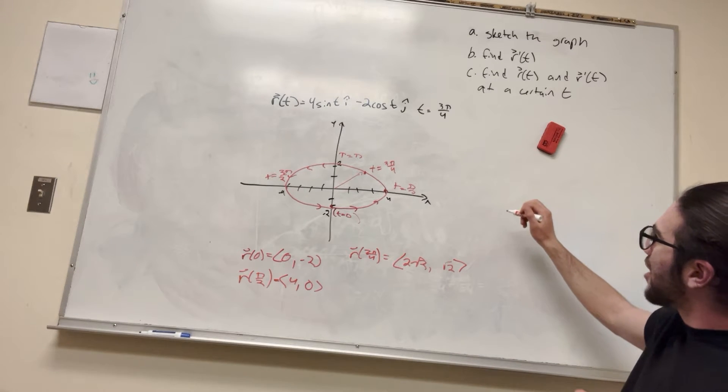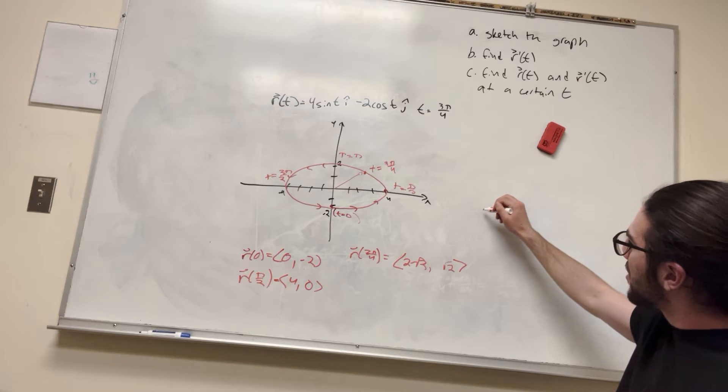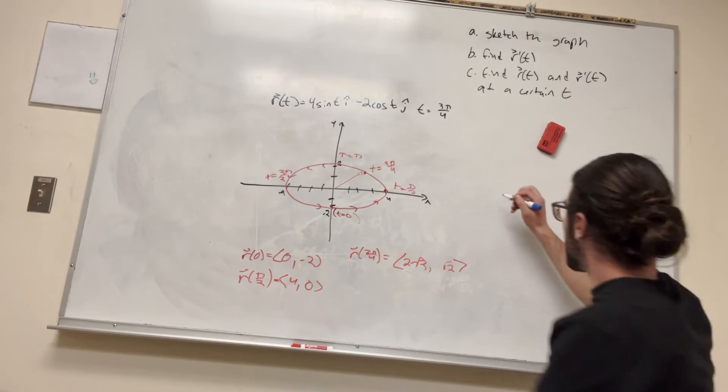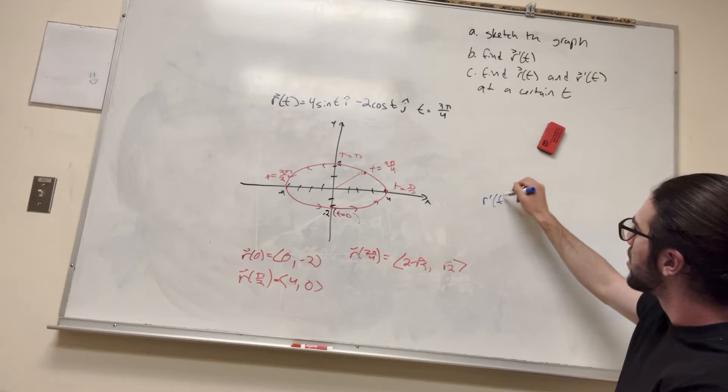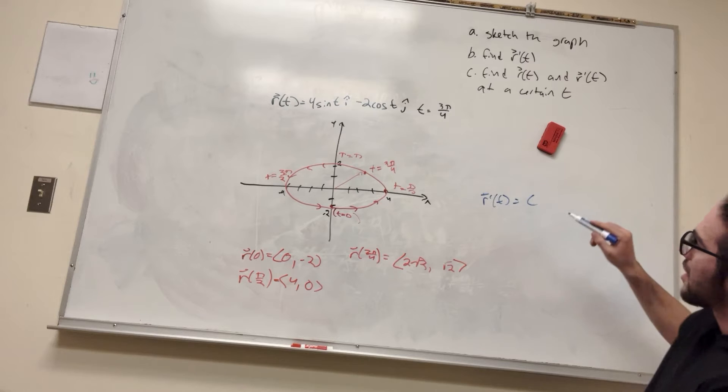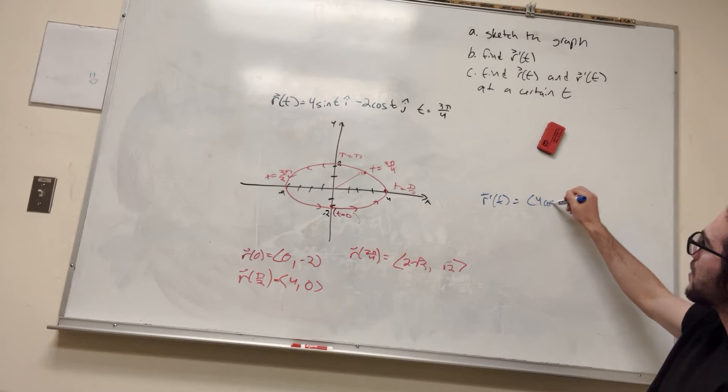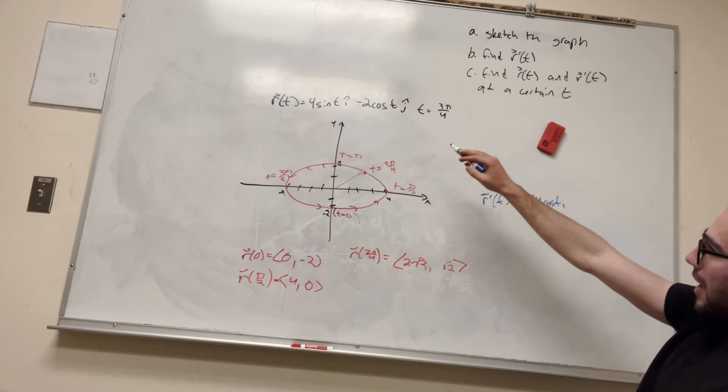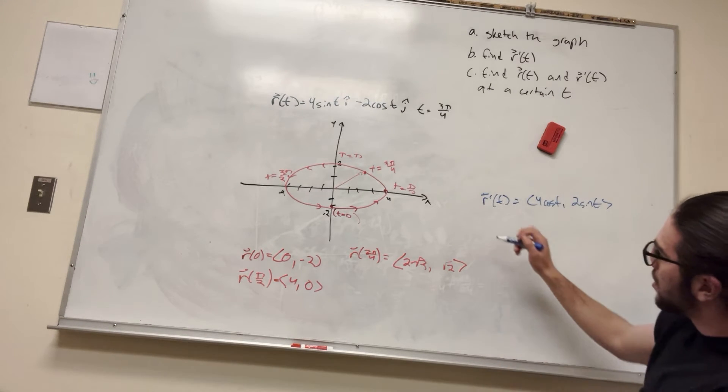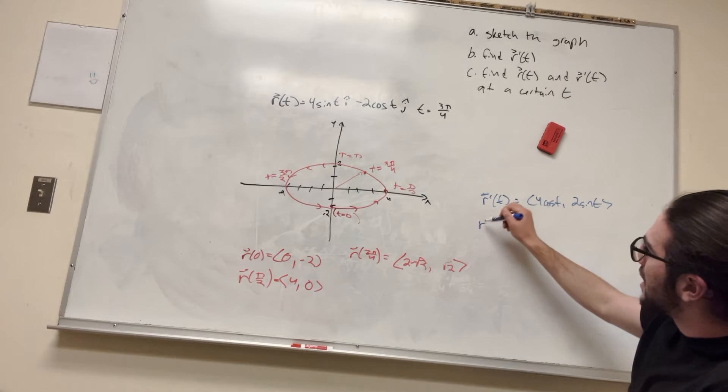Alright, so r prime of t, how do we find r prime of t? Well, we just take the derivative with both sides. Let's do blue. So r prime of t is going to be equal to, so the derivative of 4 sine of t is going to be 4 cosine of t. And then negative 2 cosine of t is going to become 2 sine of t. Pretty cool. Alright, so let's find out what the derivative is at 3π over 4.